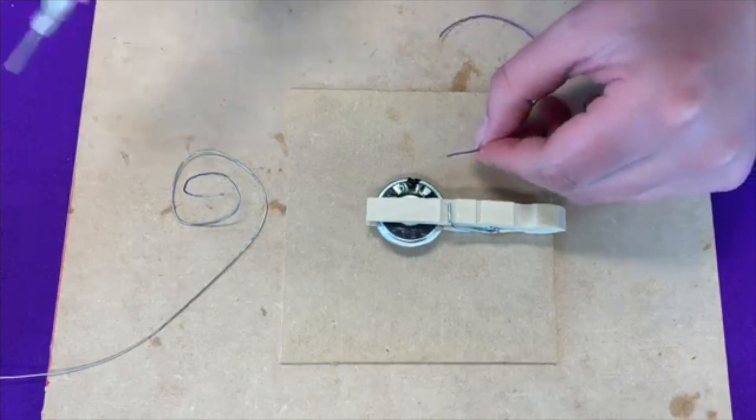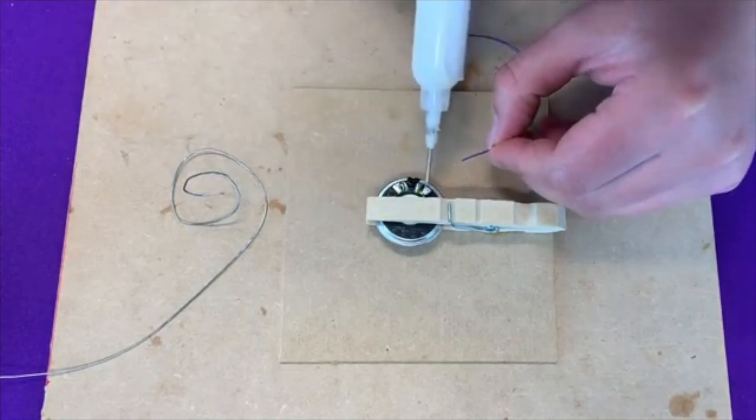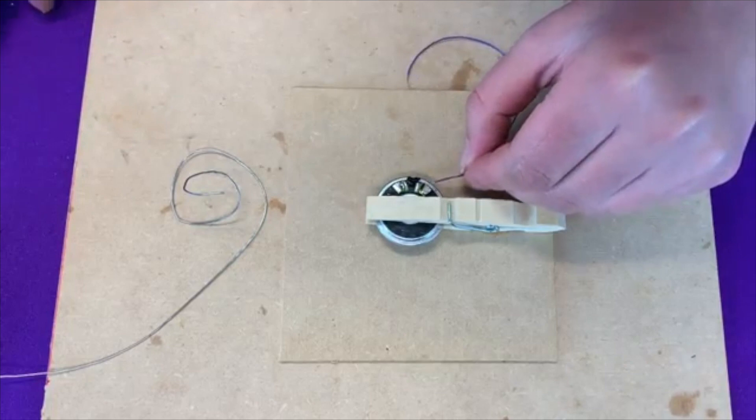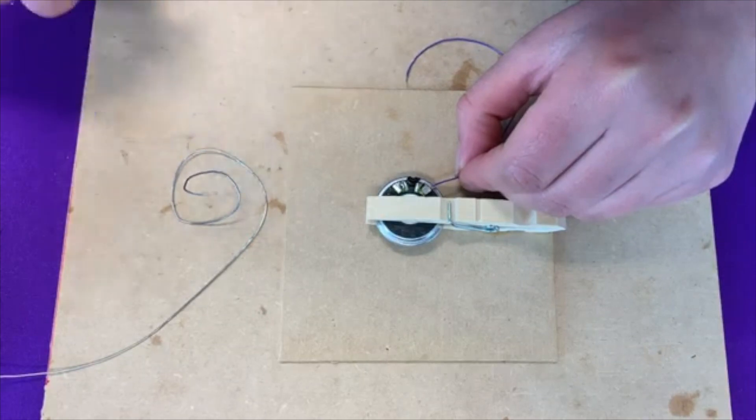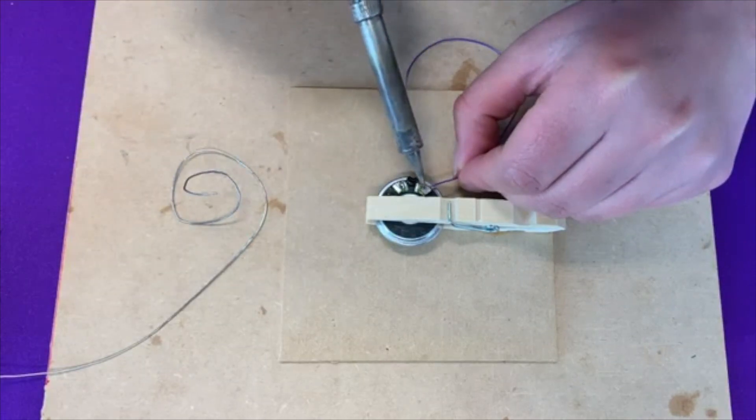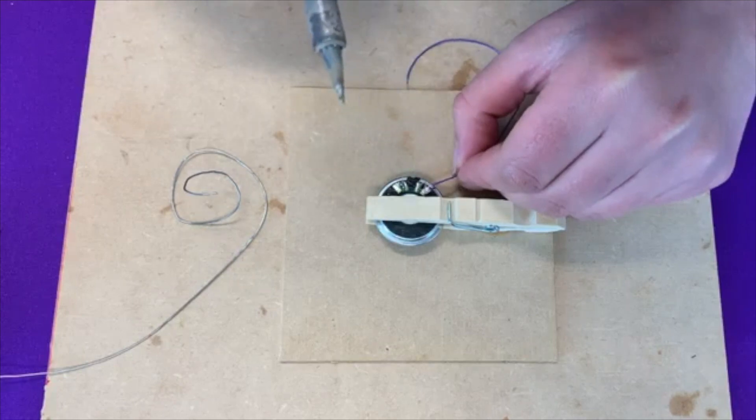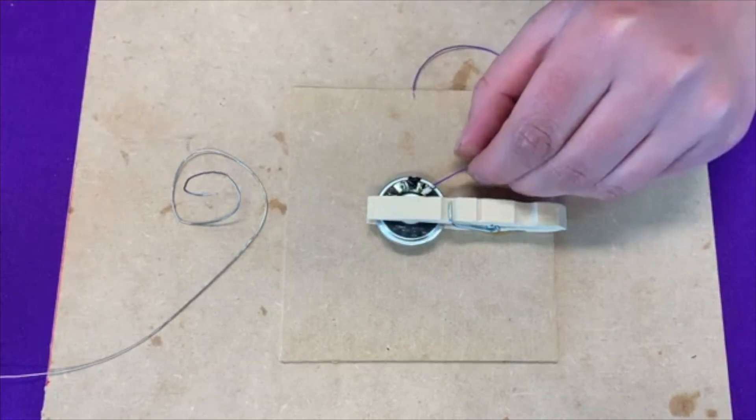And then I'm going to take my pre-tinned wire, solder to one of these two outside tabs, put a little bit of flux on the wire, clean the tip of my soldering iron, grab some solder, and hold it down for a couple seconds. And we have a joint.